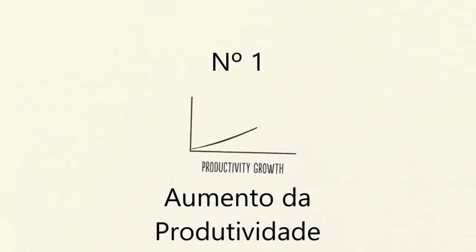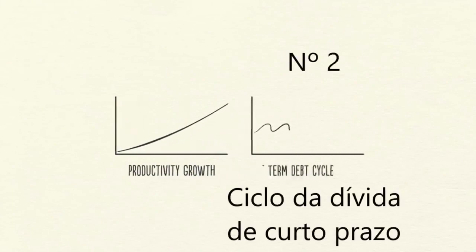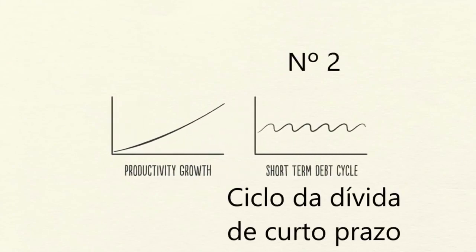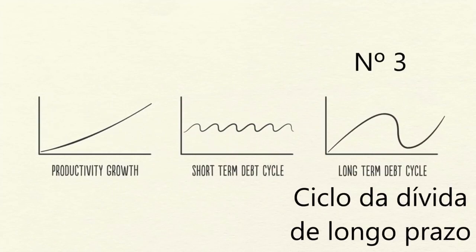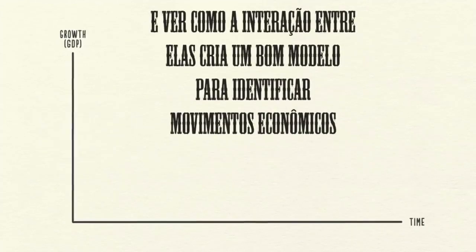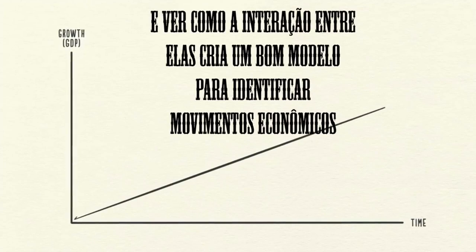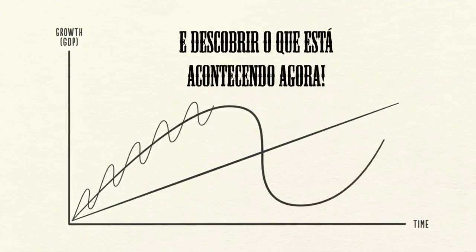Number one: productivity growth. Number two: the short-term debt cycle. And number three: the long-term debt cycle. We'll look at these three forces and how laying them on top of each other creates a good template for tracking economic movements and figuring out what's happening now.